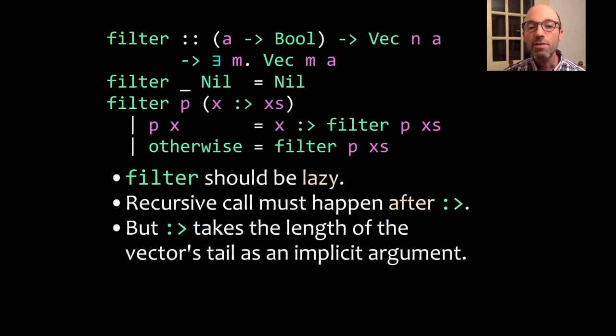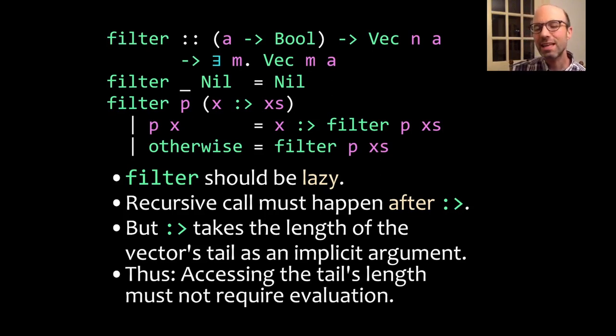So if filter is going to be lazy and yet cons needs to know the length of the vector's tail, then we want to get that length without requiring any evaluation. After all, that length is just a compile-time value. There's no reason we need it at runtime. We shouldn't have to affect our runtime evaluation in order to satisfy a compile-time requirement. That's a bit backwards.